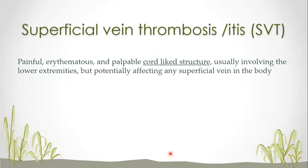Superficial vein thrombosis, or thrombophlebitis, means the same thing. It appears as a painful, erythematous, chord-like palpable structure, predominantly in the lower extremities, but it can affect any superficial vein in the body. Some of you may be aware of Mondor's disease, which is a thrombosis of the thoracic veins around the breast. It can also involve other superficial veins, but it is commonly seen in the great saphenous vein.